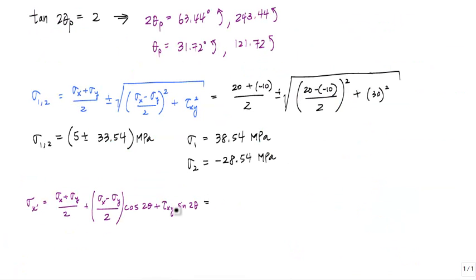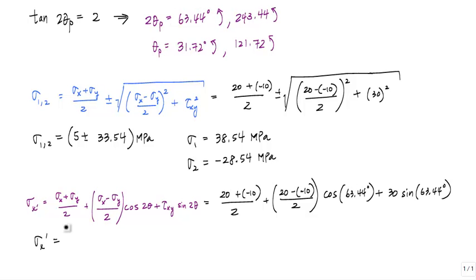So if I take this equation and just plug and chug with one of the principal stresses, I'll go with 31.72 degrees. And 2 times 31.72 is 63.44. And when I calculate, I'll get 38.54 MPa, which tells me that this 31.72 degrees is associated with sigma 1. So I can just write here.